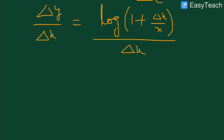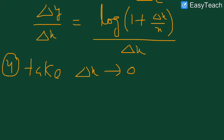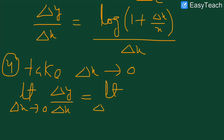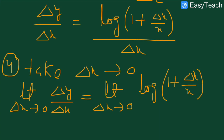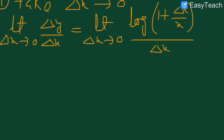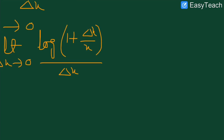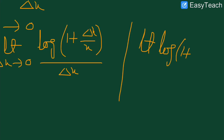Now let's apply step number four of the ab initio method: we take the limit as delta x tends to zero. So limit as delta x tends to zero of delta y by delta x is equal to limit as delta x tends to zero of log of (1 plus delta x divided by x), whole divided by delta x. Dear students, here we use a very important standard limit: when we have log of (1 plus h) divided by h, where h tends to zero, this limit is always equal to 1. You are already aware of this standard limit from previous classes.